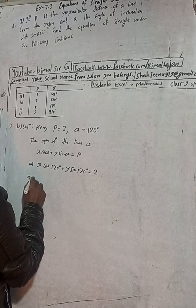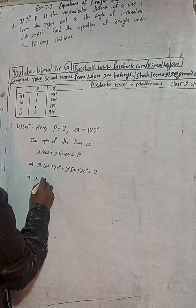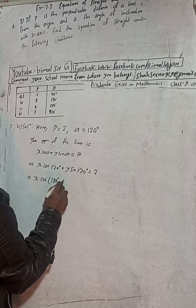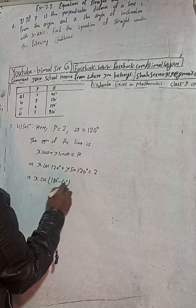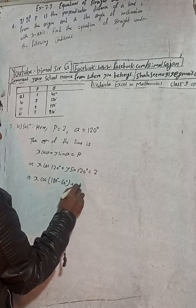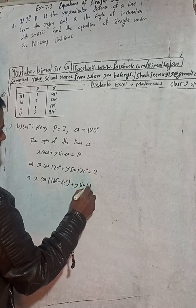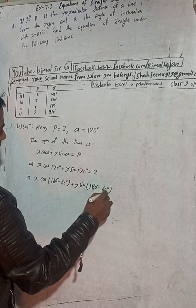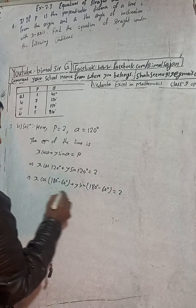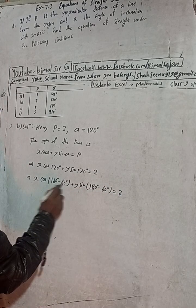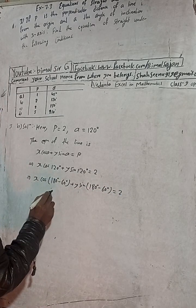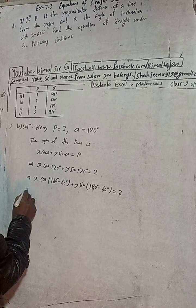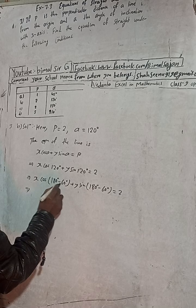x·cos 120° can be written as cos(180° − 60°), and sin 120° can be written as sin(180° − 60°), both equal to 2. Using the supplementary angle form: 180° − 60° = 120°.